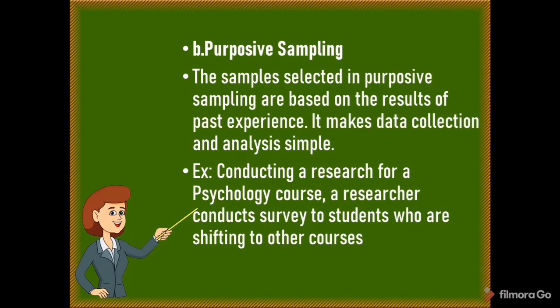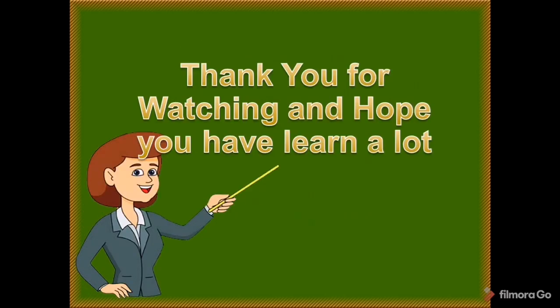The second type of non-probability sampling is purposive sampling. Samples selected in purposive sampling are based on the results of past experience, making data collection and analysis simple. An example is a researcher conducting a survey of students who are shifting to other courses for a psychology research. Thank you for watching and we hope you have learned a lot. See you in our next lesson. Goodbye!